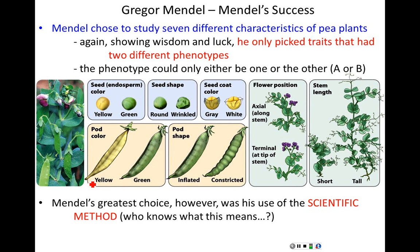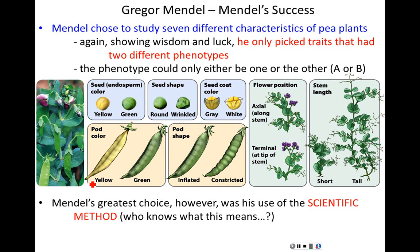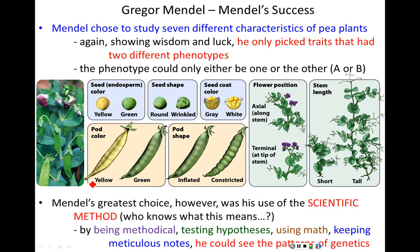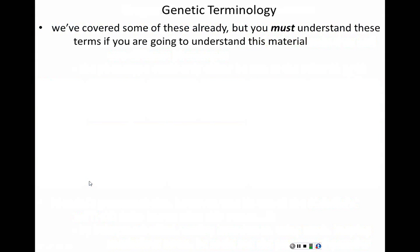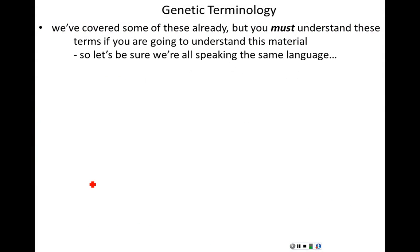Mendel's greatest choice, however, was using his university education and the scientific method. He was methodical, tested his hypotheses using logic, used math to get quantitative values, kept meticulous notes, and using all of these skills, he could see the patterns of genetics. Now before we go right into the mechanisms — these monohybrid crosses — let's be sure we're all clear on the terms we're about to use, so we're all speaking the same language.